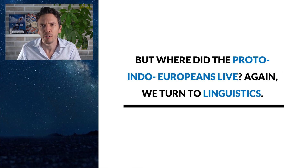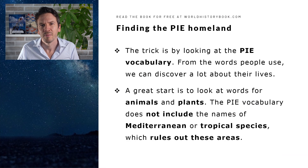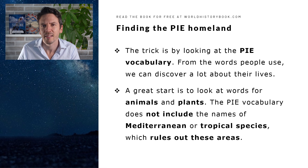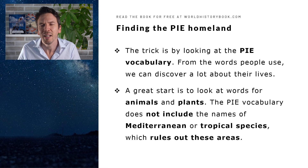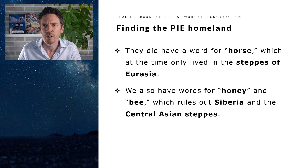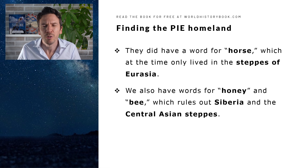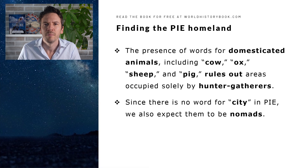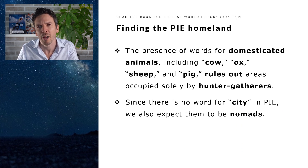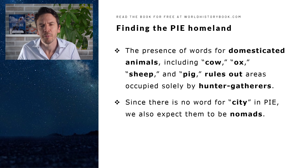But where did the Proto-Indo-Europeans live? Again, we turn to linguistics. The trick is by looking at the PIE vocabulary, because from the words people use we can discover a lot about their lives. The PIE vocabulary does not include the names of Mediterranean and tropical species, which immediately rules out these areas. They do have the word horse, which at the time only lived in the steppes of Eurasia. And we also have words for honey and bee, which rules out Siberia and the Central Asian steppes. The presence of words for domesticated animals, including cow, ox, sheep and pig, rules out areas solely occupied by hunter-gatherers. And since there is no word for city in PIE, we also expect them to be nomads.